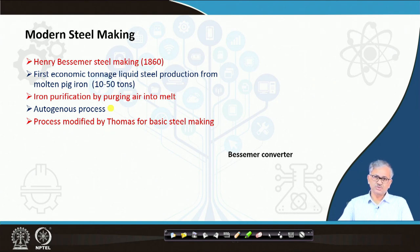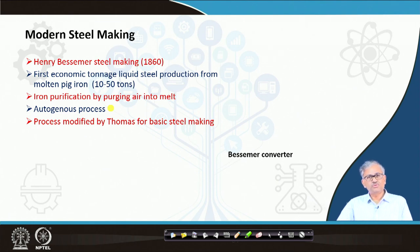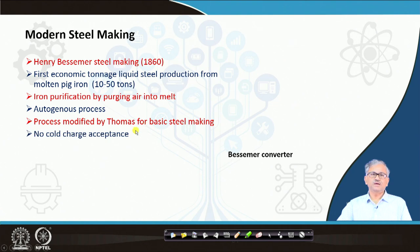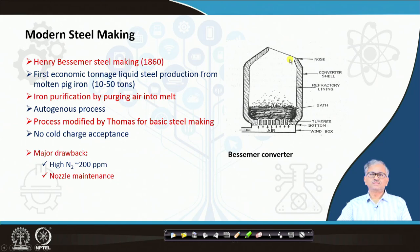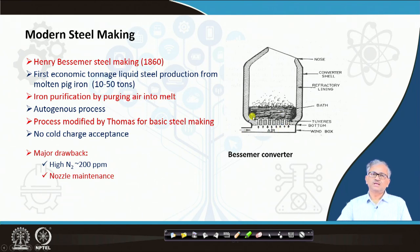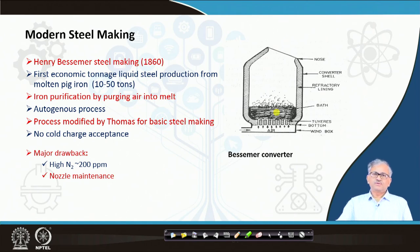It was an autogenous process — no external heat supply was required, just sufficient to purify the hot metal. You cannot use any extra cold material like scrap — it was just sufficient to convert liquid iron to steel. The process was modified by Thomas for basic steel making. This is the furnace — it is very similar to the modern basic oxygen furnace, except that here oxygen in the form of air was introduced from the bottom of the furnace. Many holes are there through which the air was passed, the oxygen in the air reacts with the impurities and oxidizes them — carbon gets oxidized, carbon monoxide goes away to the atmosphere, and silica, manganese, and phosphorus are oxidized and collected into the slag.